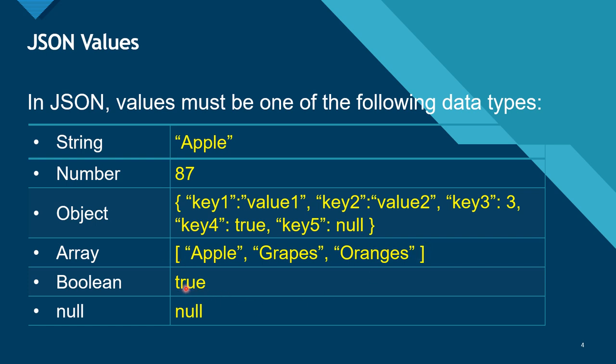The value can be boolean, which means it can be true or false. And the value of the key can be null, meaning no value.